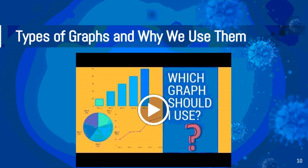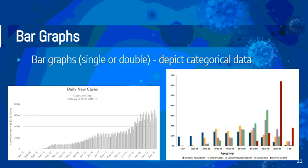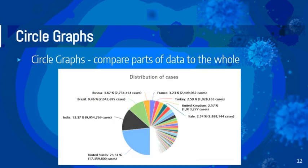Feel free to watch that video for more information — it's also going to be embedded in the slideshow. Simply put, bar graphs can be single or double and are really used to depict categorical data. A circle graph is used to compare parts to the whole.